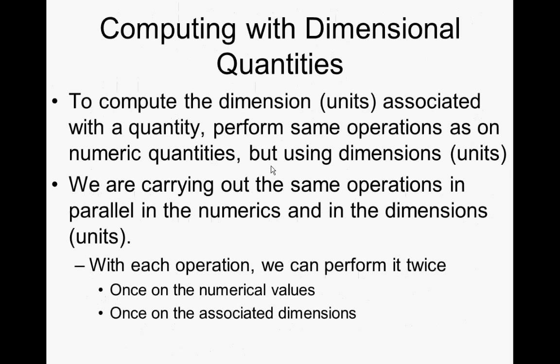I haven't really talked about this but we need to start talking about it now. Suppose we have one quantity x with dimensions associated with it, and another quantity y with other dimensions. We know how to multiply x times y. It turns out that we just carry out the parallel operations with units — for multiplying x times y, we multiply the dimensions.